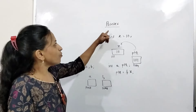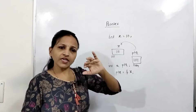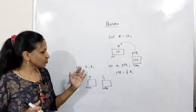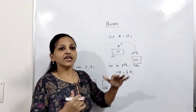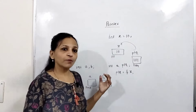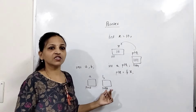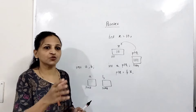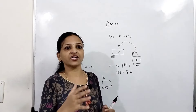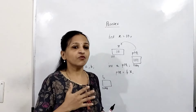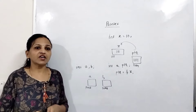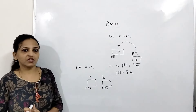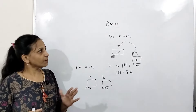Now, what is a pointer? A pointer is also a variable, but there is a difference between a normal variable and a pointer. A normal variable holds values — it means you store a normal integer, a whole number, any character, or any floating point value. If you want to store such values, you use a normal variable.